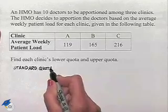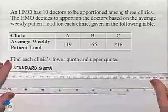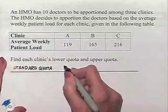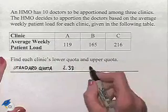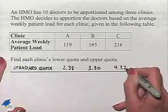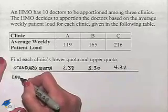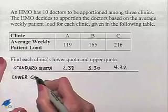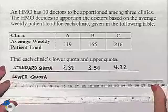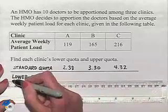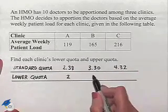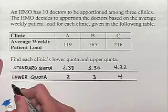We're going to make a row for it and list 2.38 under A, 3.30 under B, and 4.32 under C. In our next row we're going to list our lower quota. To get that value we're going to take each value from the standard quota row above and truncate it — that is, drop off the decimal part — so we're going to have 2, 3, and 4.